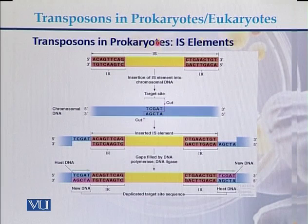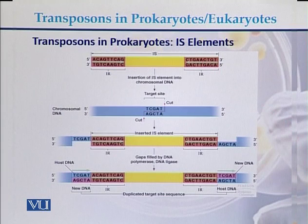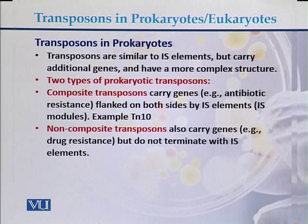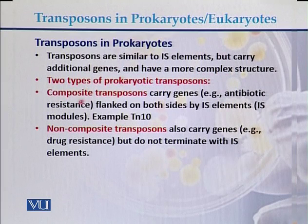In prokaryotic IS elements, there is a gene in the middle with inverted repeat sequences on both ends. Transposons are similar to IS elements but carry additional genes and have a more complex structure. There are two types of prokaryotic transposons.